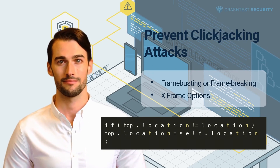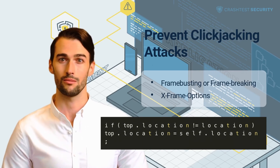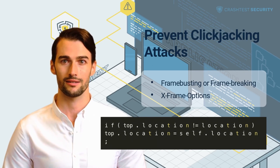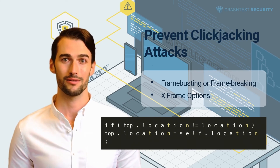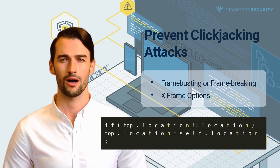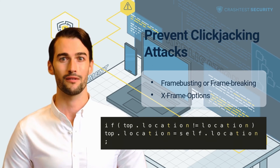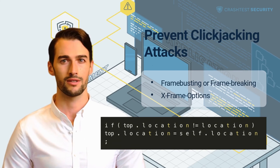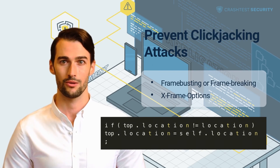X-Frame-Options: X-Frame-Options is an HTTP response header that determines whether a browser can render a page within a frame. It is an effective defense against clickjacking attacks since developers use it to ensure that web content is not embedded into frames of other sites. Developers set the X-Frame-Options header for all responses that contain HTML content, using three possible value types: Deny — prevents all websites from framing content; SAMEORIGIN — allows only the current website to frame content; ALLOW-FROM — allows content from a specified URL to frame content.